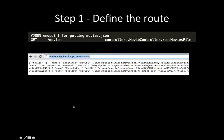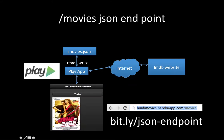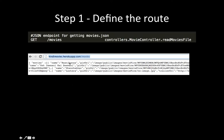So let's get into code. The first thing you do in your Play backend app is you define an endpoint. In this case, I'm defining a /movies endpoint, which basically reads the file and then serves it to the user. It's going to read this JSON file and then serve it to your app. You can check it out now — it's live at hindimovies.herokuapp.com/movies. That's the endpoint you have to first define — where you get the JSON file from.